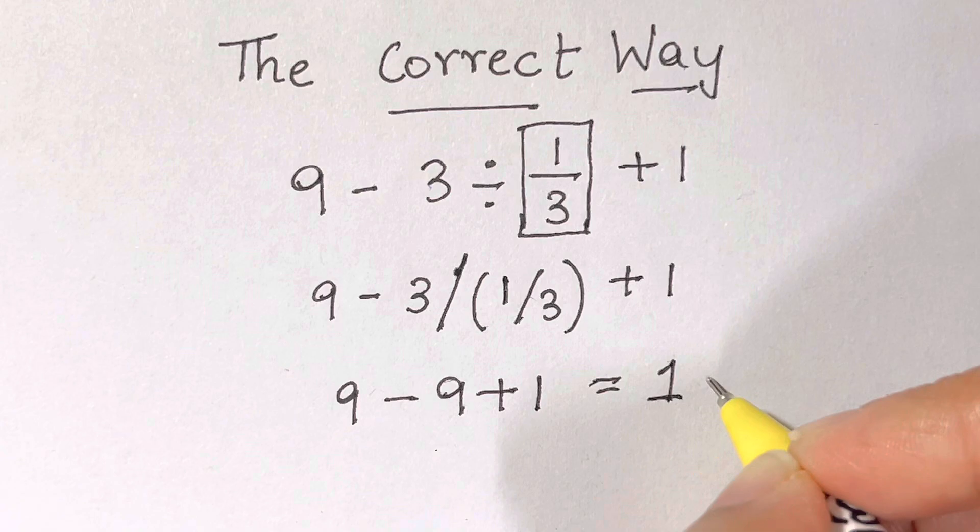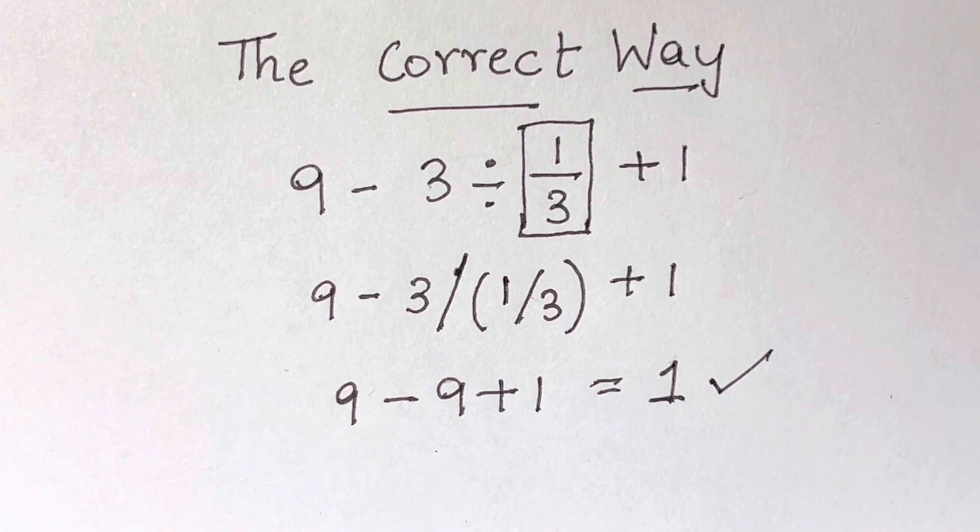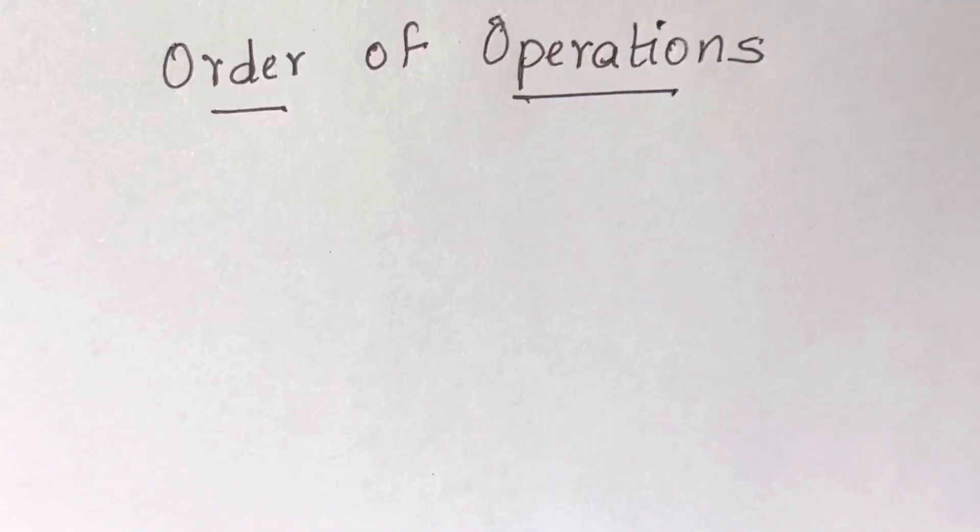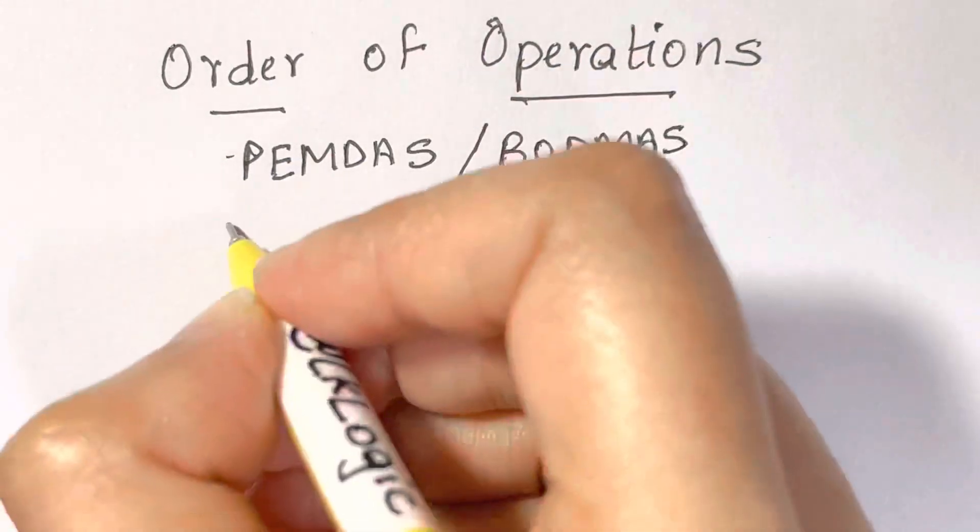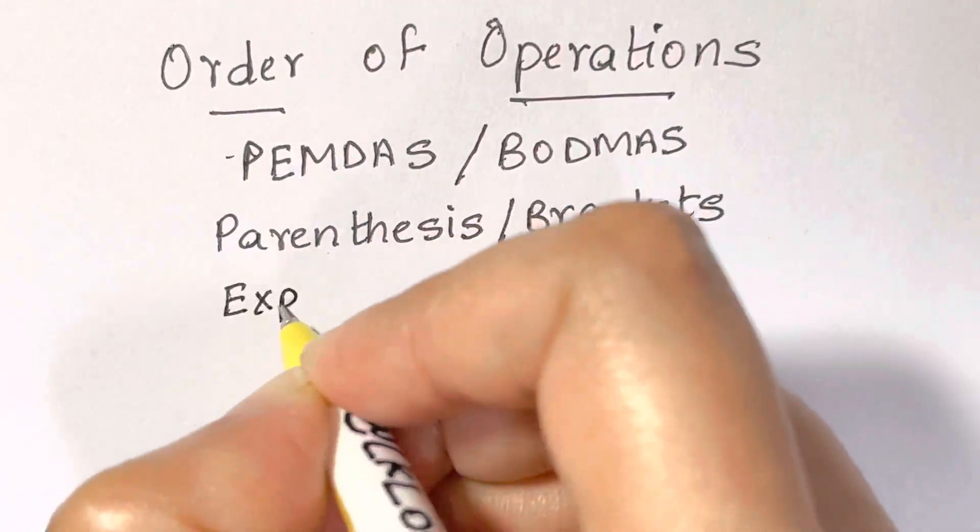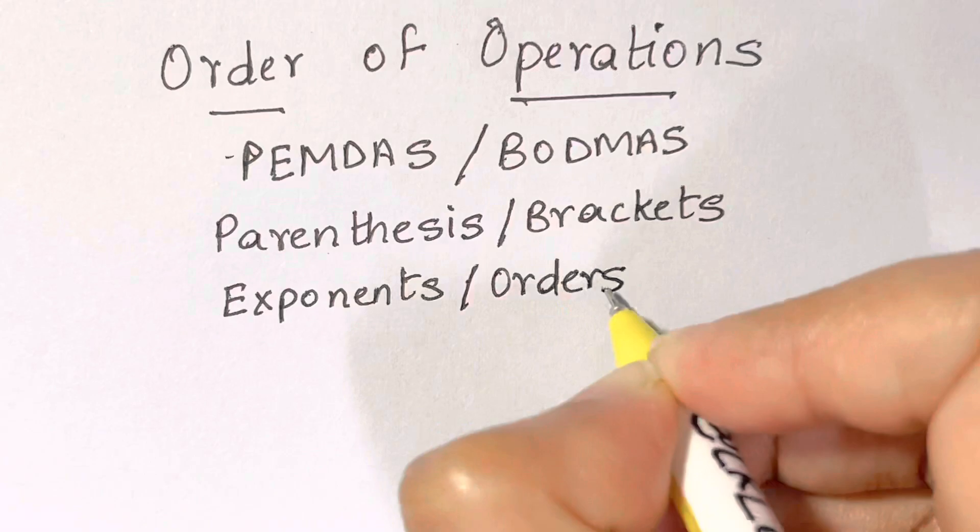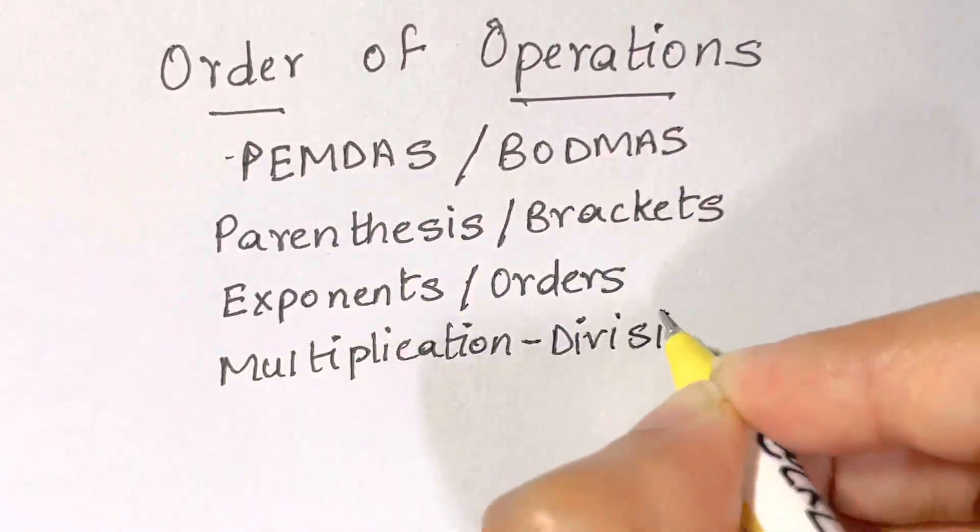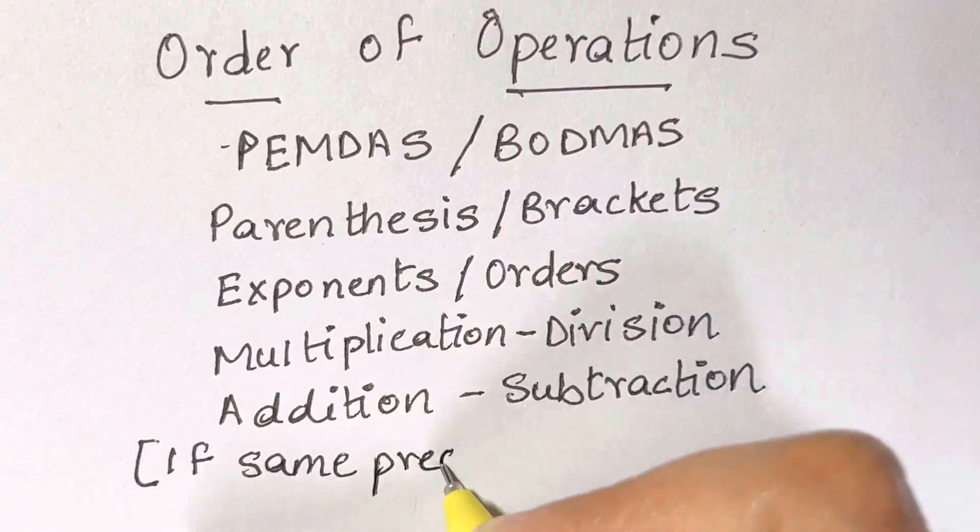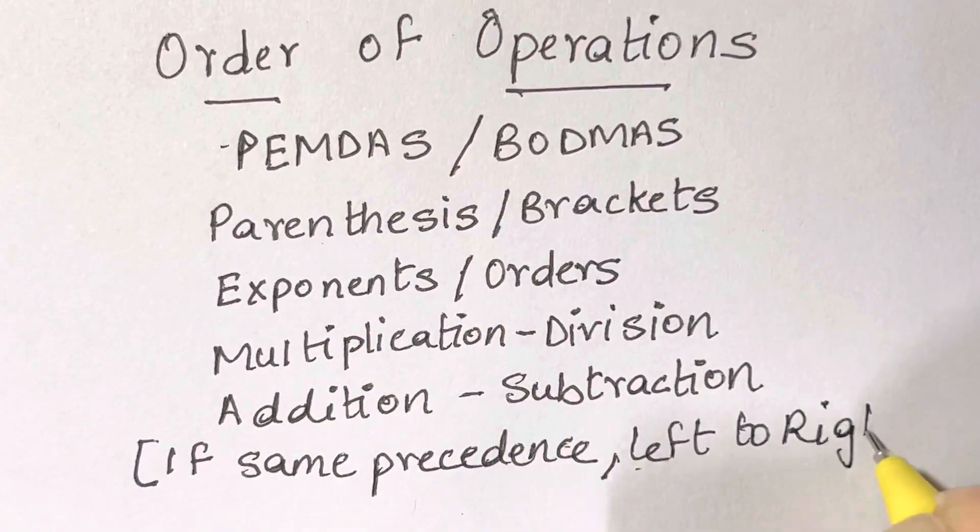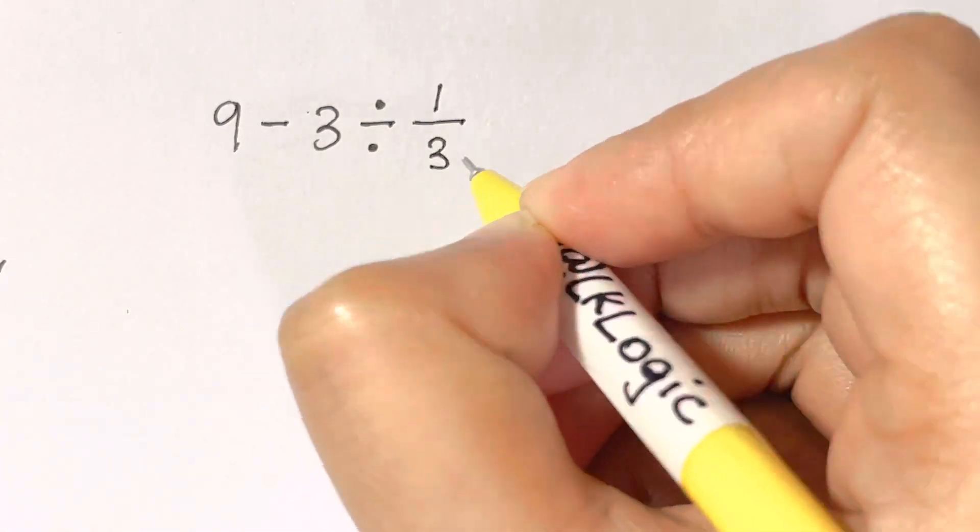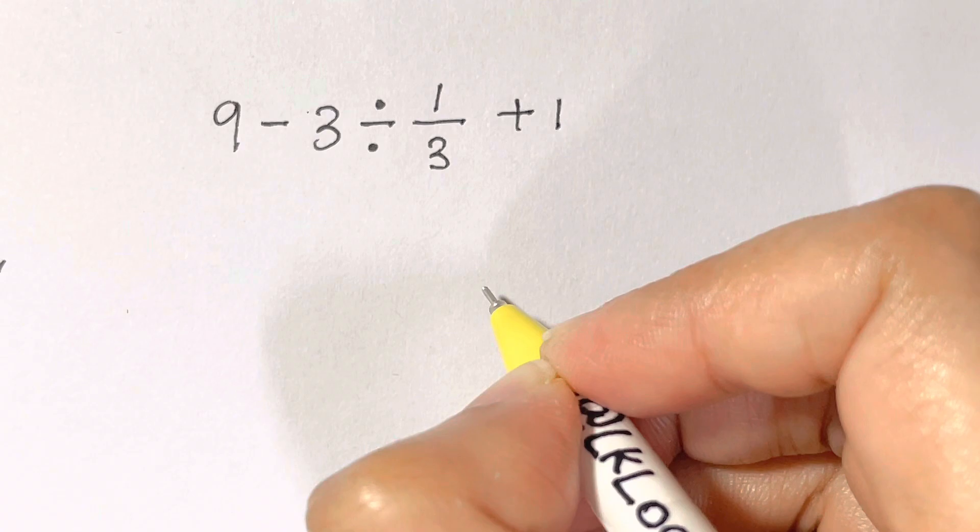This problem is a good reminder of order of operations. This can be reminded by the acronym PEMDAS or BODMAS, which relates to parenthesis or brackets, exponents or orders, then multiplication-division, and finally addition-subtraction. Another important rule is that if you have operators of same precedence, you want to evaluate the expression from left to right.